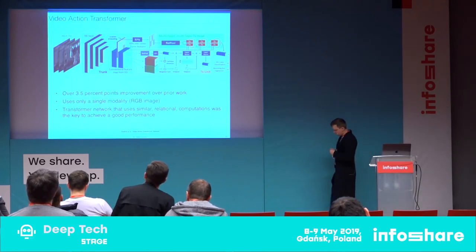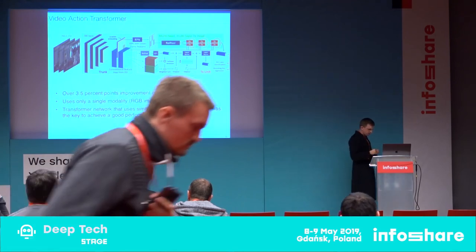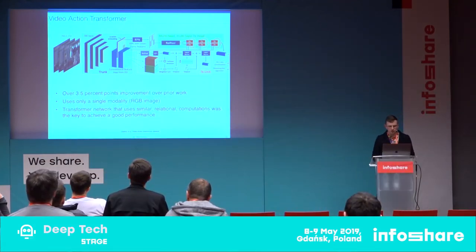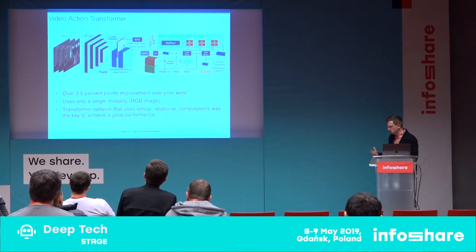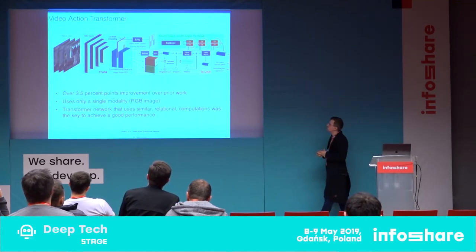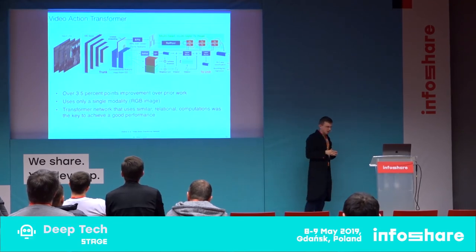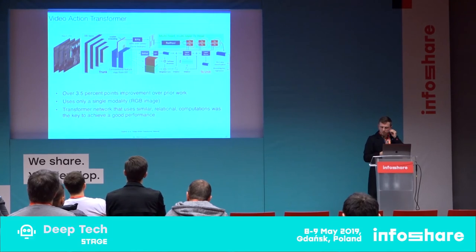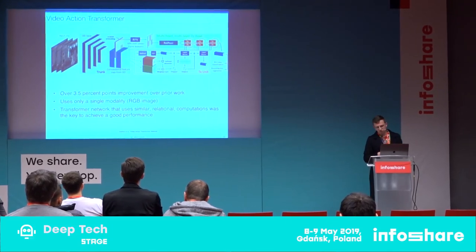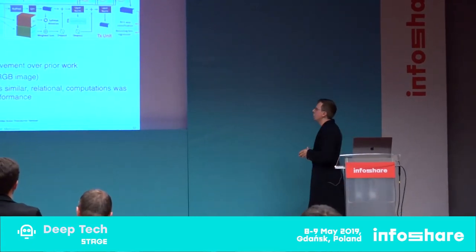These same ideas can be successfully applied to other problems. Another architecture using similar principles is the transformer, which was initially applied to language — machine translation — but can also be applied to visual question answering or action recognition, where we have a video of people doing something like answering the phone, and we can have pairwise relationships between objects using the transformer.